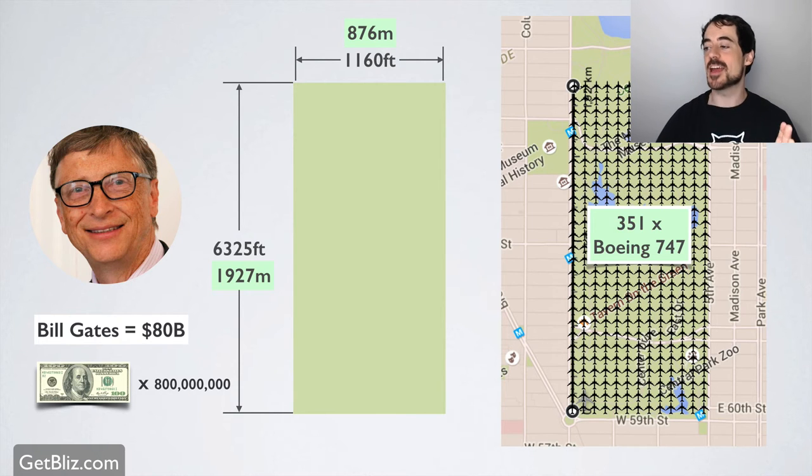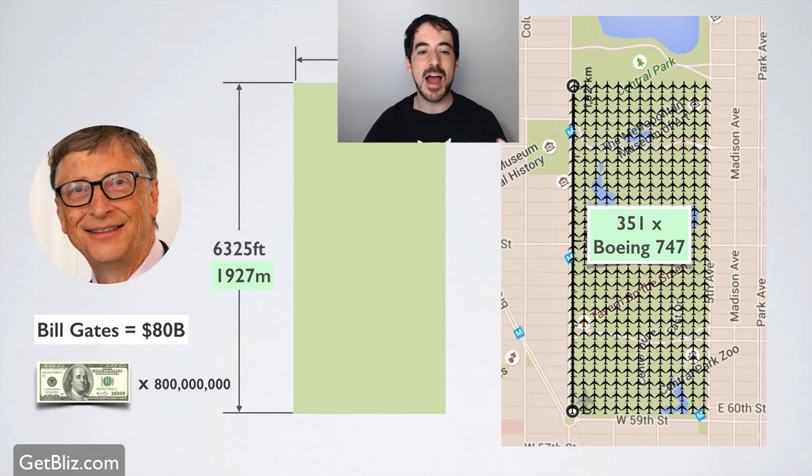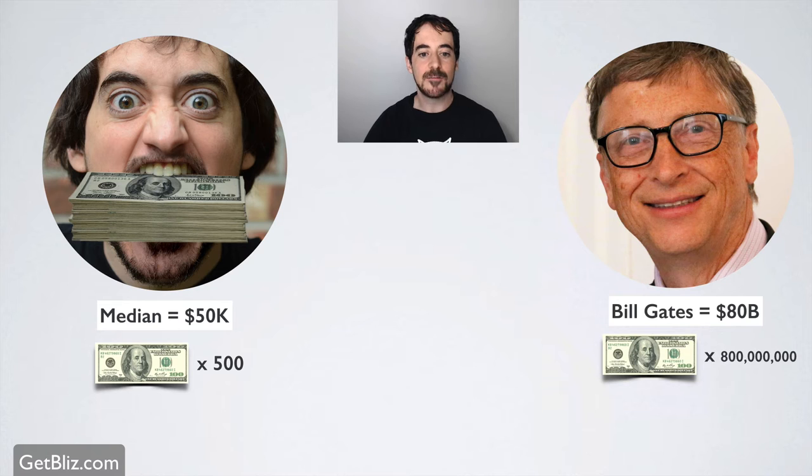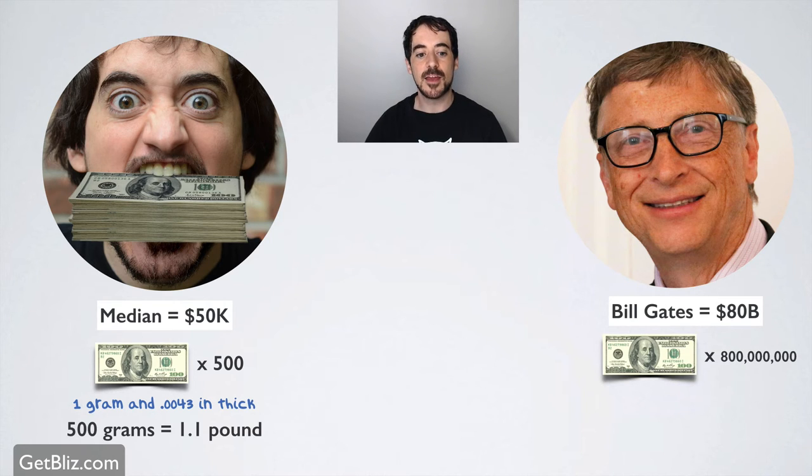But we're not done yet. Let's compare that in not just surface area, but if you were to pile it. So let's say you were to pile $50,000 on your mouth in $100 bills. Well, you get a pile that is, considering that it's 0.0043 inches thick per bill, you have about one pound of bills on your mouth. That's your entire net worth. You could actually chew on it. And it would be about two inches wide. So it's chewable. It's almost like a big burger. That's your entire net worth. You can take that anywhere, no problem. Let's compare that to Bill Gates.